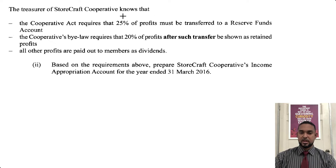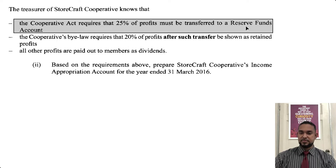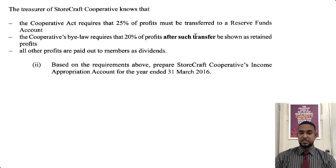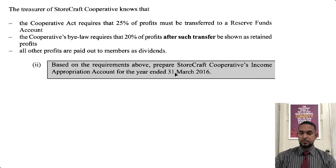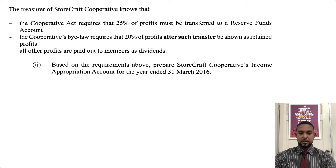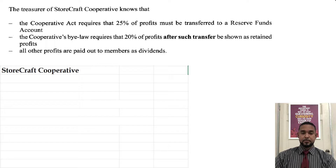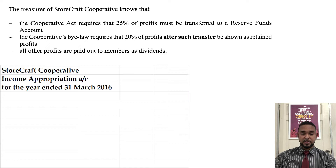The treasurer of Storecraft Cooperative knows that the Cooperative Act requires that 25% of profits must be transferred to a reserve funds account. The cooperative bylaw requires that 20% of profits after such transfer be shown as retained profits, and all of the remaining profits are paid out as dividends to members. Based on these requirements, prepare Storecraft Cooperative's income appropriation account for the current year — so let's scroll down to the solution. Don't forget to head it up: Storecraft Cooperative income appropriation account for the year ended 31st March 2016.